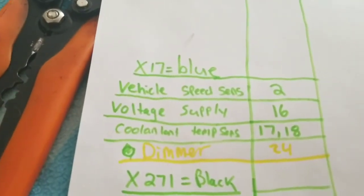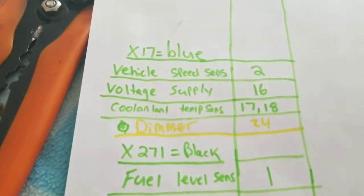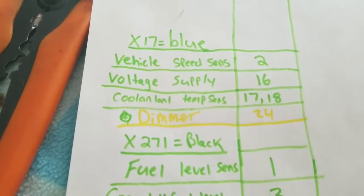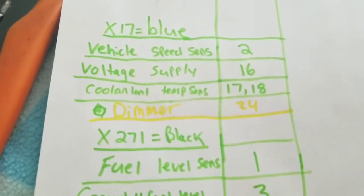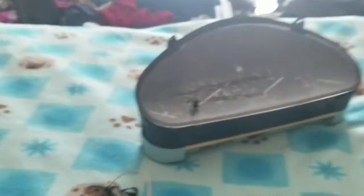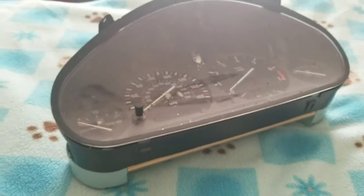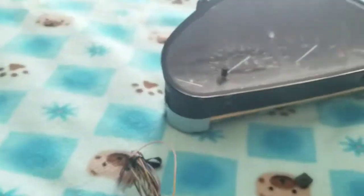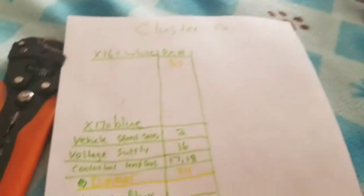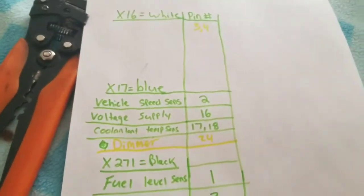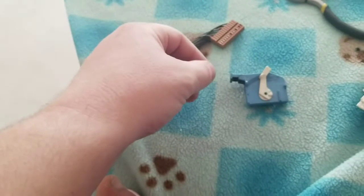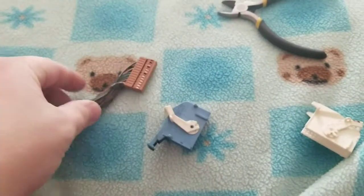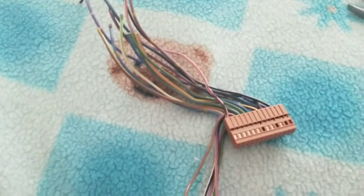Now we're going to start working on the X17 blue clip which has the vehicle speed sensor, voltage supply, coolant temp sensor. There's two of them right there I need, and then the dimmer, which as I was reading online controls the light, so I'm going to turn the headlights on, the lights of the dash should come on. So let's work on that one.